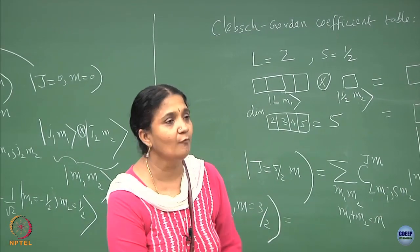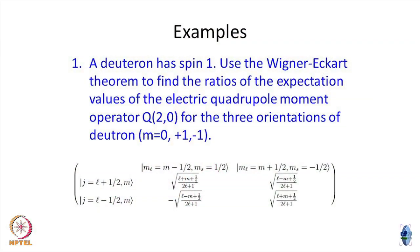Now let me get to the problem of quadrupole moments. The deuteron has spin 1. Use the Wigner-Eckart theorem to find the ratios of the expectation values of the electric quadrupole moment operator. Specifically, I have taken the component — it is a rank-2 tensor — with Q equal to 0, for the three orientations of the deuteron.